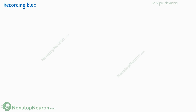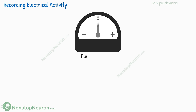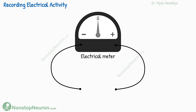Let's start with the basics of recording electrical activity. An electrical meter, used to record any electric activity, has two electrodes — a positive and a negative. The meter shows the potential at the positive electrode as compared to that on the other side. I will keep the positive electrode marked with a green circle, so you always know from where we are comparing.